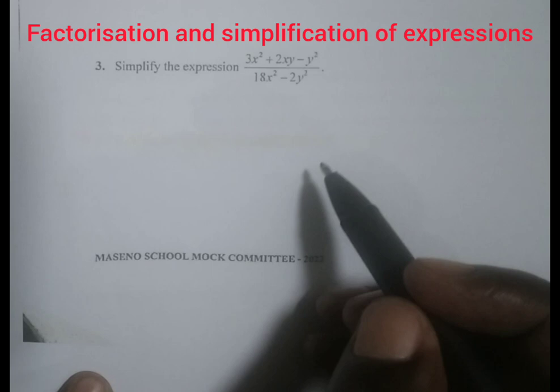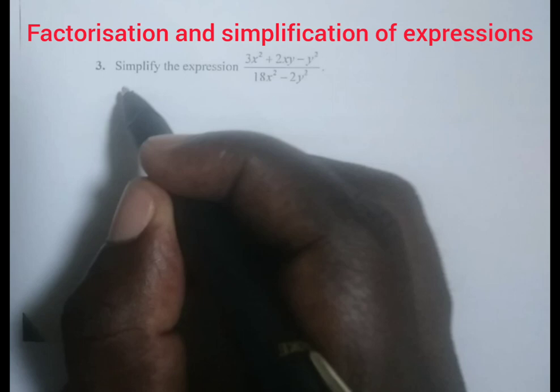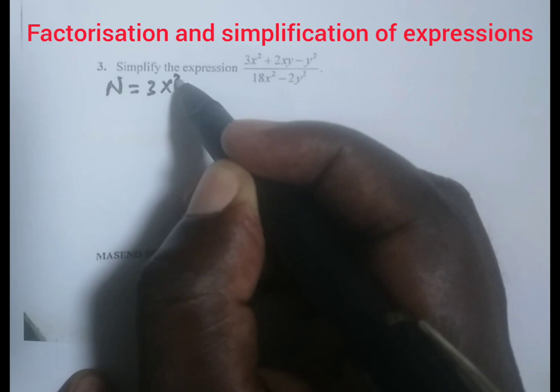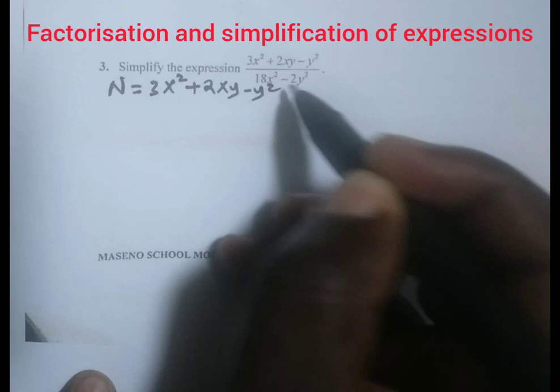We have the numerator and the denominator. The numerator is in the form of a quadratic expression which is 3x squared plus 2xy minus y squared.